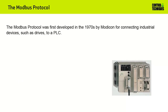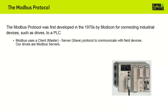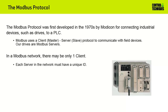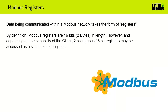The Modbus protocol was first developed in the 1970s by Modicon for connecting industrial devices, such as drives, to a PLC. Modbus uses a client or master, server or slave protocol to communicate with field devices. Our drives are Modbus servers. In a Modbus network, there may be only one client or master. Each server or slave in the network must have a unique ID. Data being communicated within a Modbus network takes the form of registers.